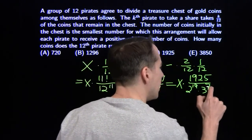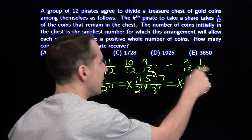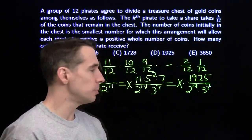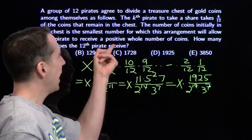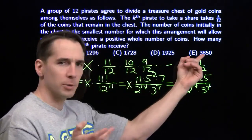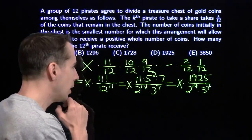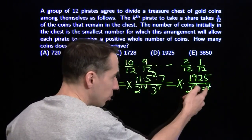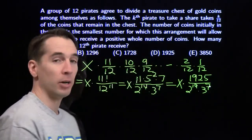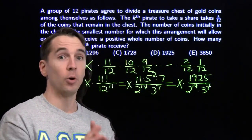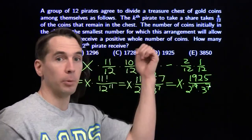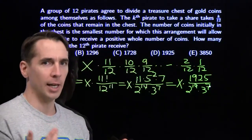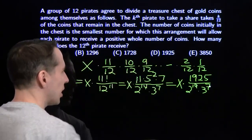You'd be forgiven for just circling 1925 and moving on, but seeing 3850 right there as another option scares me a little. It makes me remember that each pirate has to get a positive whole number of coins, so maybe there's a reason we'd need to multiply by 2. One way to check is to work it through: let X be 2 to the 14th times 3 to the 7th and verify each pirate gets a positive whole number of coins. If you're pressed for time, bubble D and move on.